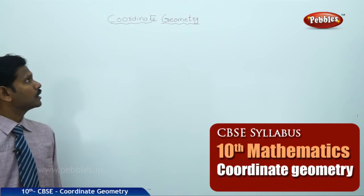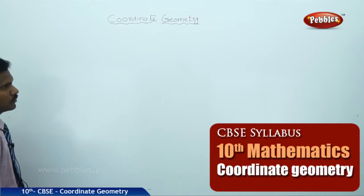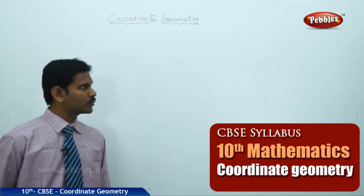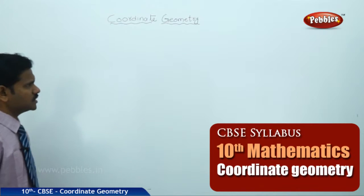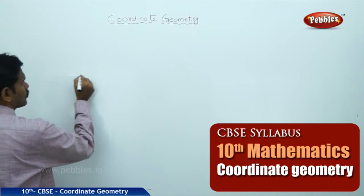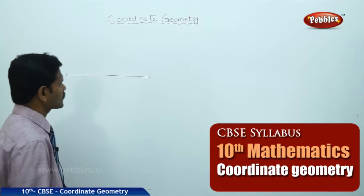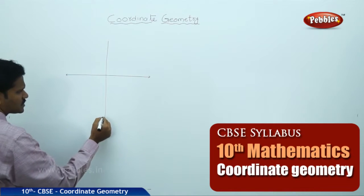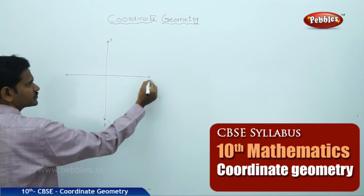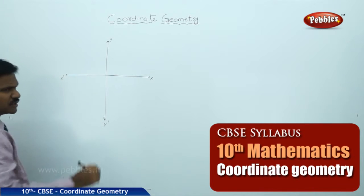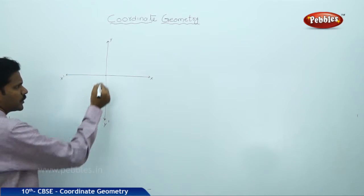Let us discuss our next chapter: Coordinate Geometry. A plane is a flat surface which can be extended in all directions. In the plane, the horizontal axis is called the x-axis and the vertical axis is called the y-axis. The point of intersection of the x- and y-axis is called the origin, denoted by O.